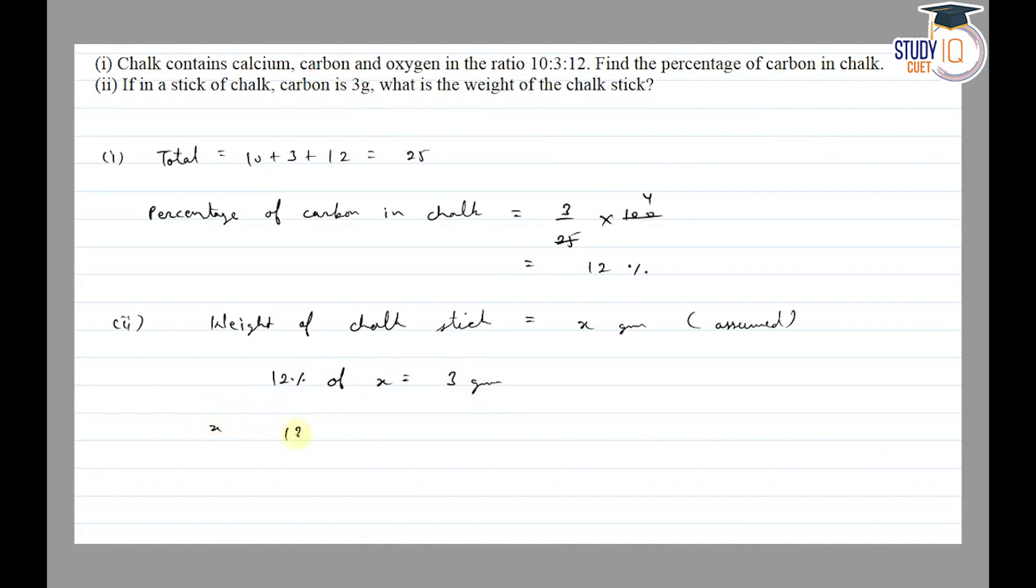So 12% of x equals 3. By cross multiplication, 3 times 100 divided by 12. 12 into 3 goes 4 times, giving us 25. Therefore, the weight of the chalk stick is 25 grams. Thank you.